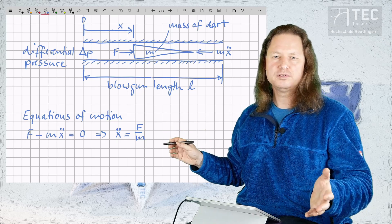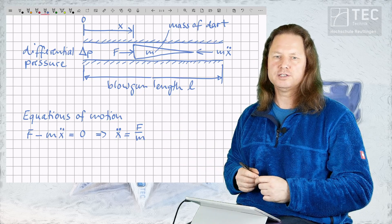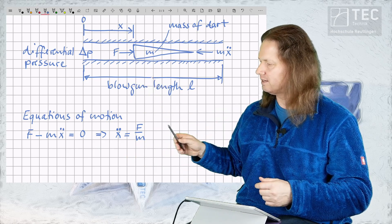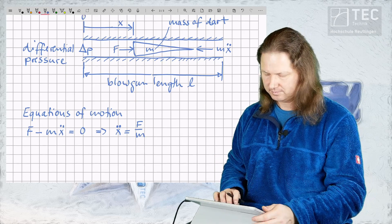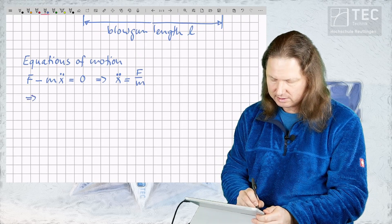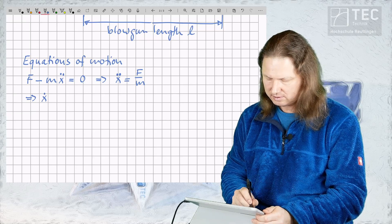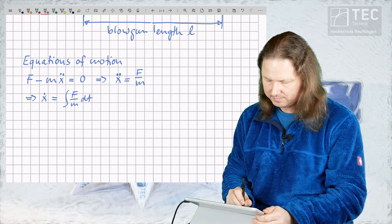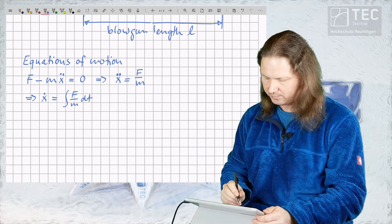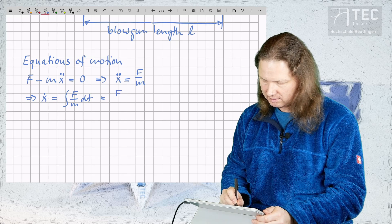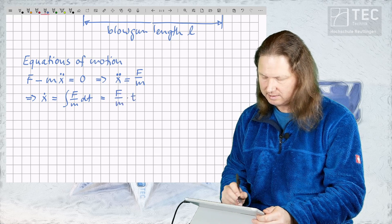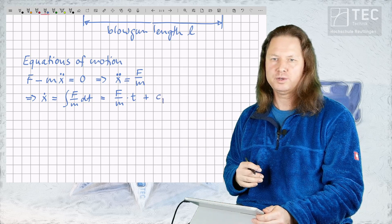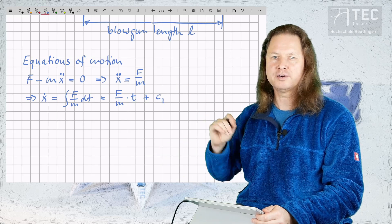This is a very simple second order differential equation that can be solved for the x position of the tail of the dart by double integration on both sides. So the first integration yields the speed of the dart x dot which is the integral of F divided by M dt. That is the integral of that constant over time which gives F divided by M times t plus some integration constant c1 whose value we are going to determine later from the initial conditions that apply in our case.